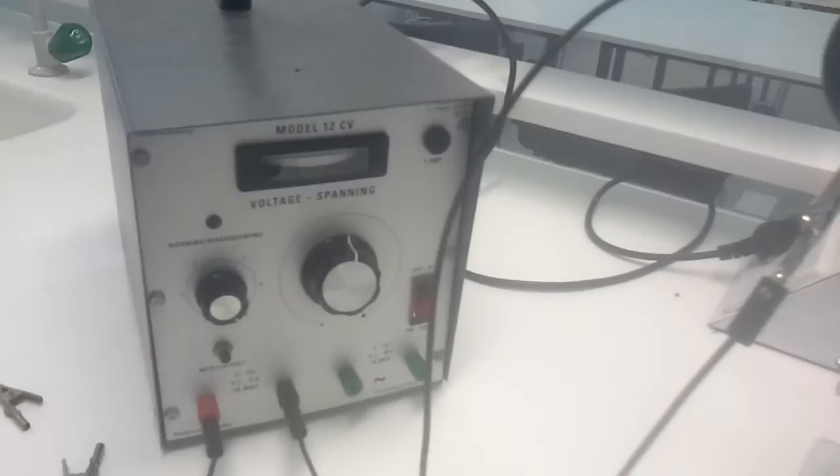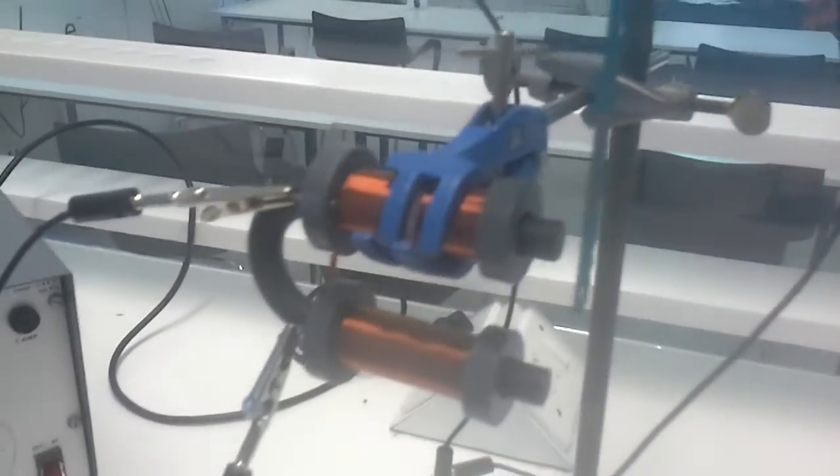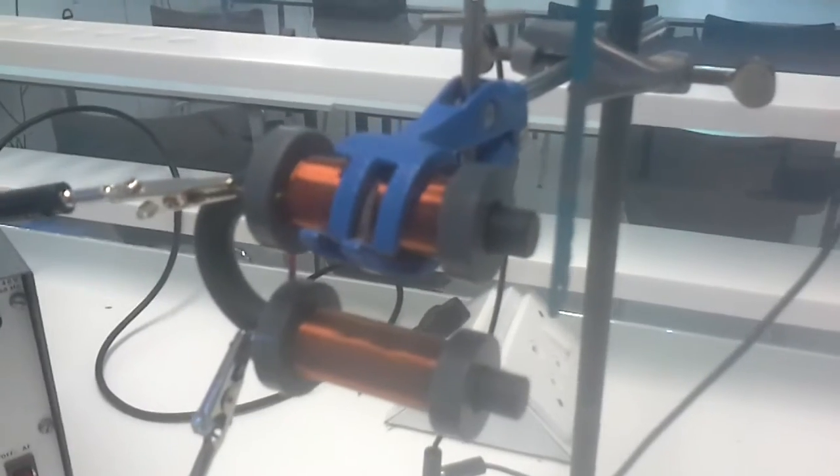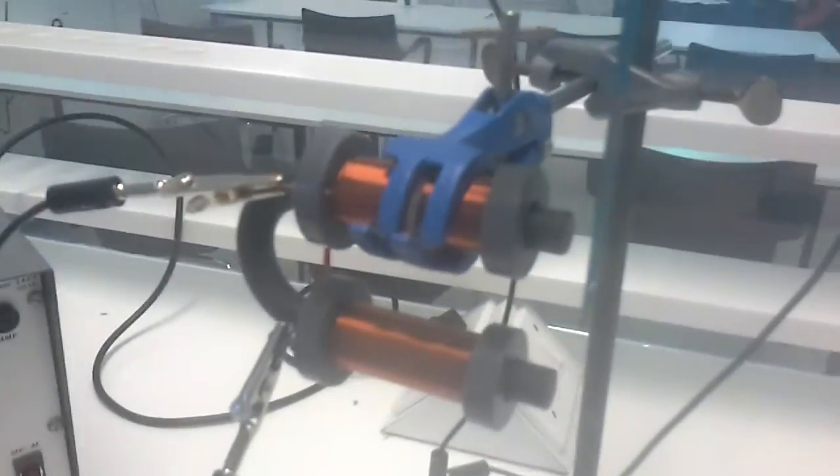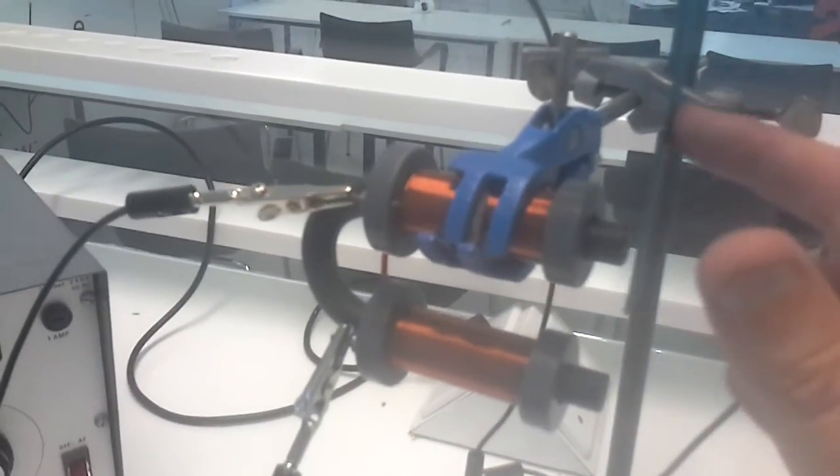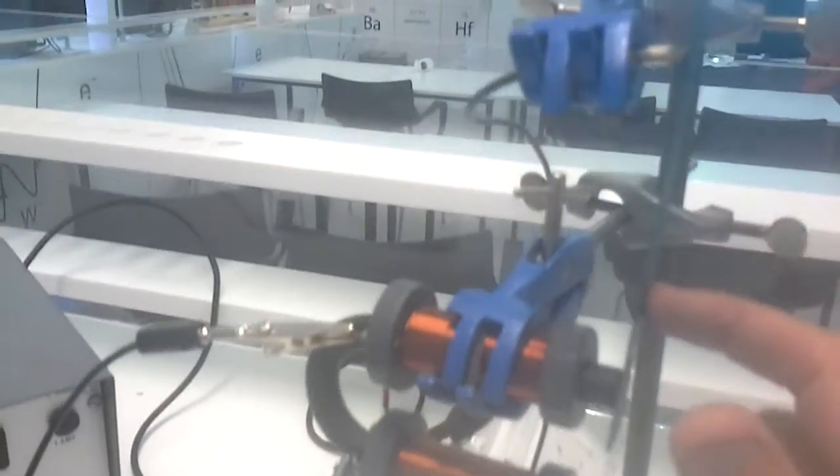My first circuit is going to be powered by this power supply. And the power supply is just connected to this electromagnet here. And as soon as I put electricity through the electromagnet, it's going to attract this piece of metal here. Like this. Okay.